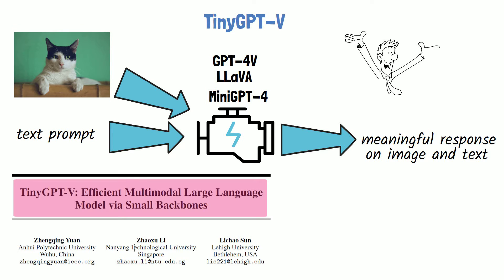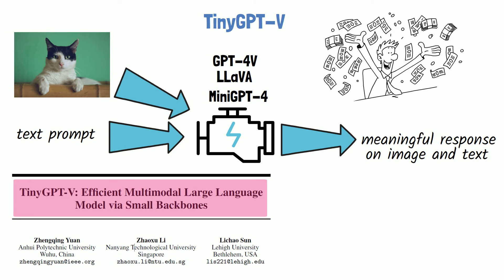However, these models require a substantial amount of resources to run, making them not easily accessible to all people. To overcome that, in this paper the researchers present TinyGPT-V, a smaller vision-language model that needs fewer resources to run, making it more accessible yet still impressively powerful.